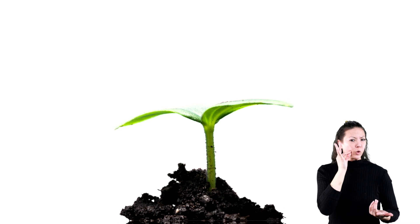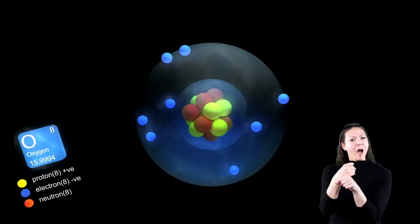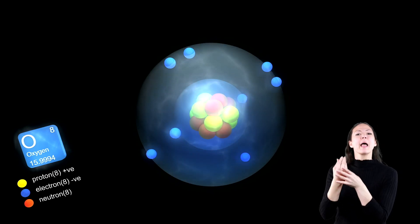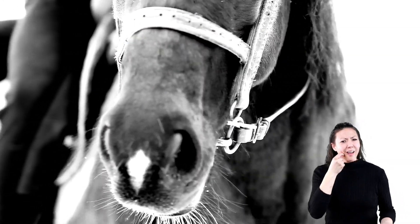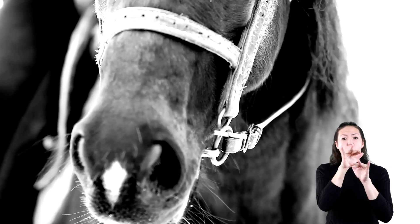Another byproduct of photosynthesis is oxygen. Plants give off oxygen during photosynthesis, and we need to breathe oxygen. Look how neat this is: we — people and animals — breathe out carbon dioxide, which plants need to grow, and plants give off oxygen, which we need to live. What a beautiful relationship!